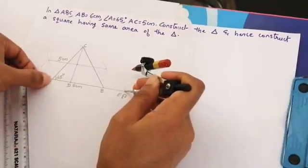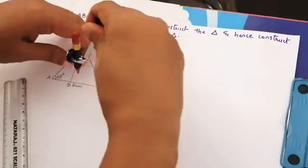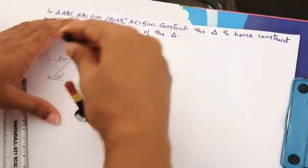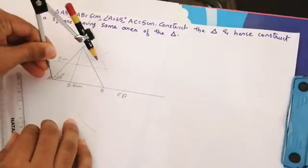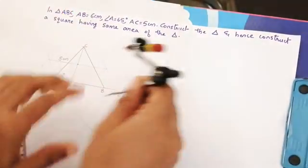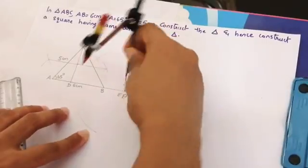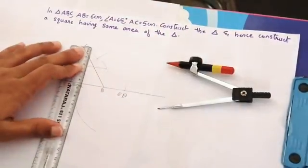Now what I will do is I have to take more than half perpendicular bisector of this line as we did before for the other construction questions, just taking more than half on both the sides like this. Now I have to join them. This is my point O.